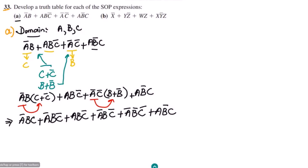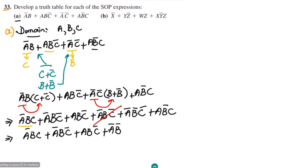Now let me find any duplicate terms. A prime B C — no duplicate. A prime B C prime — yes, there is a duplicate, so I remove one. A B C prime — no duplicate. A prime B prime C — no duplicate. A B prime C — no duplicate. So the final standard SOP terms are: A prime B C, plus A prime B C prime, plus A B C prime, plus A complement B complement C, plus A B prime C.